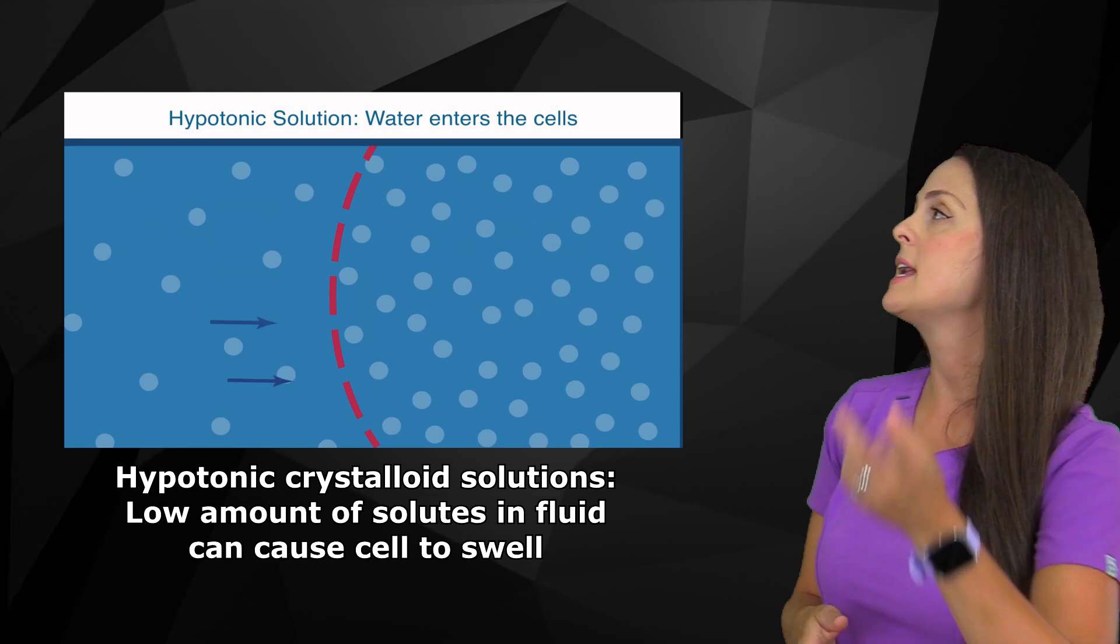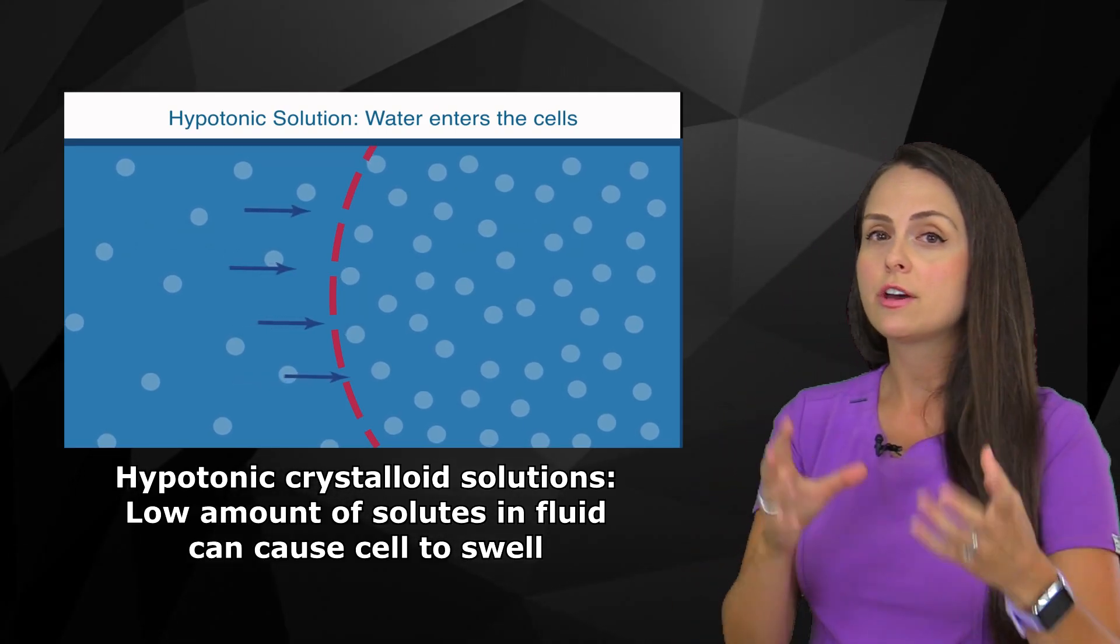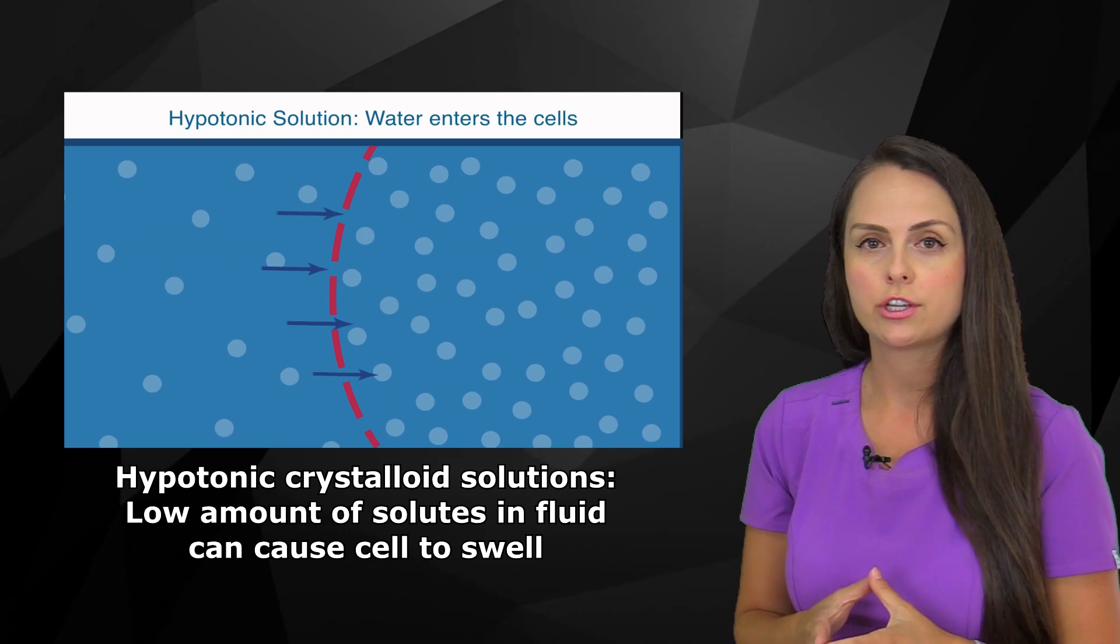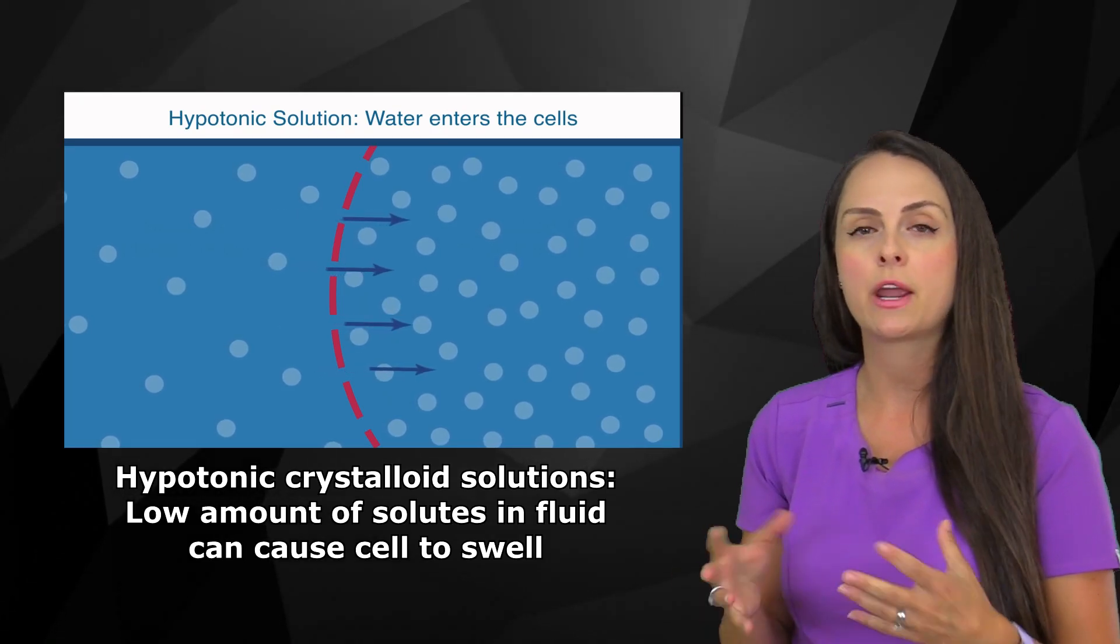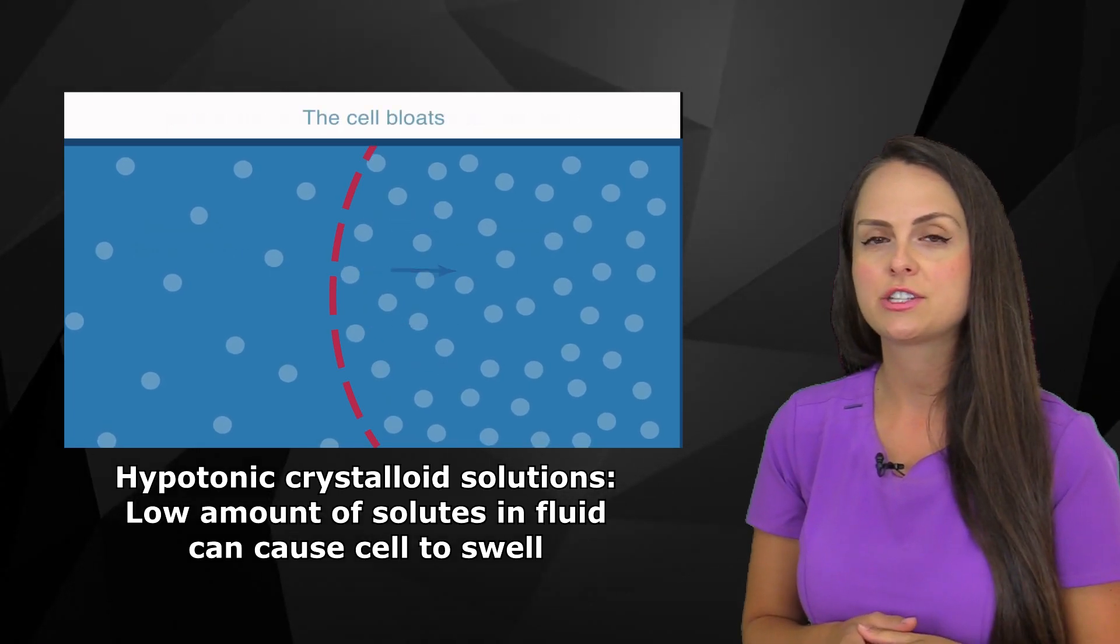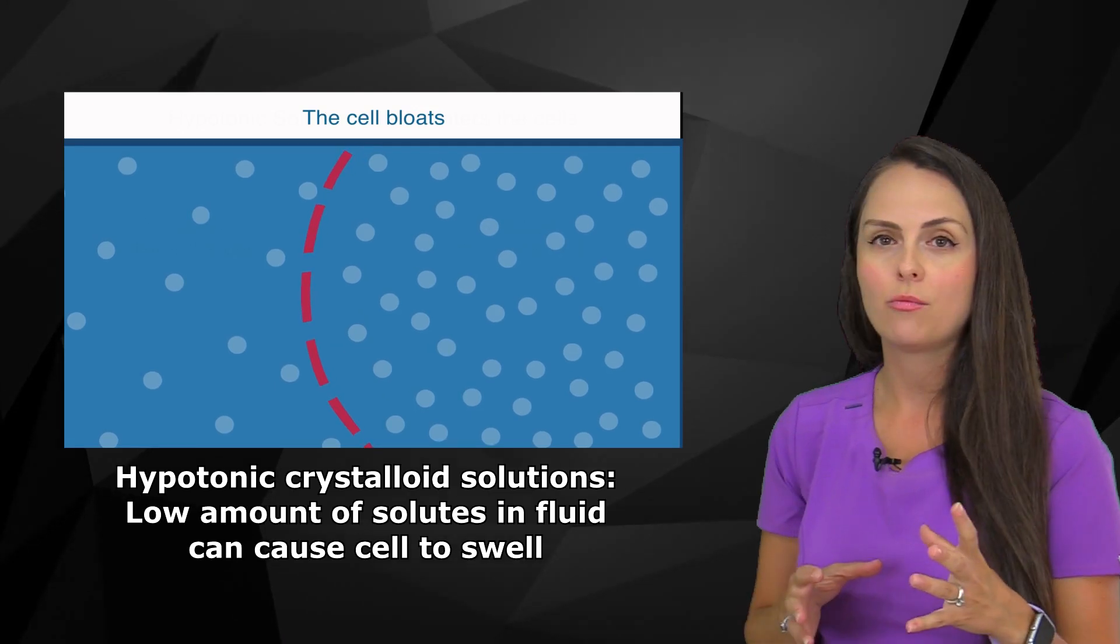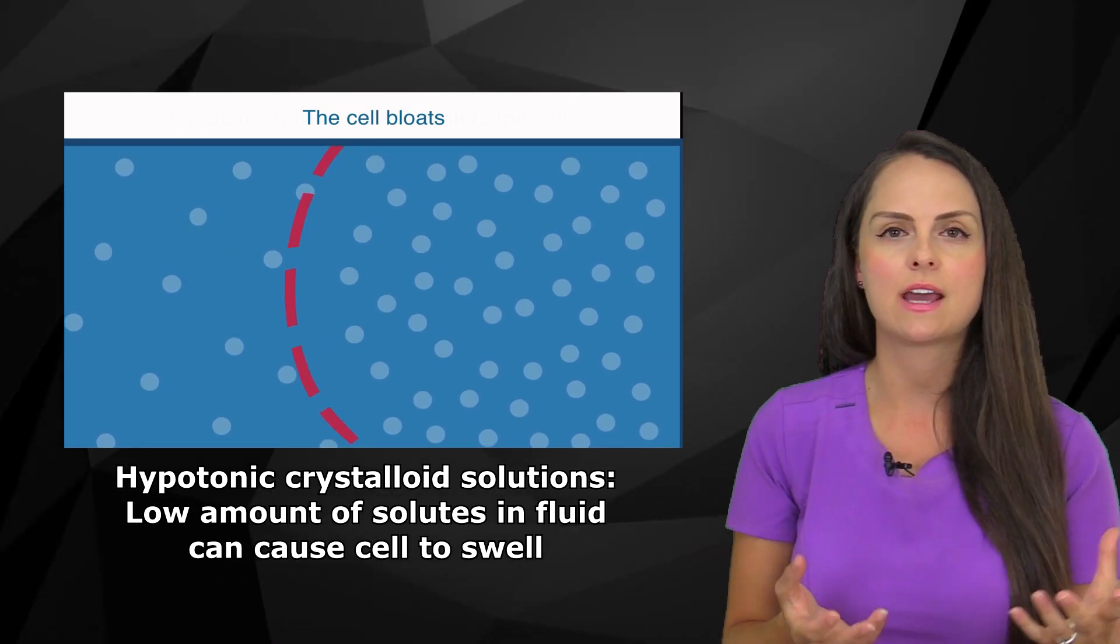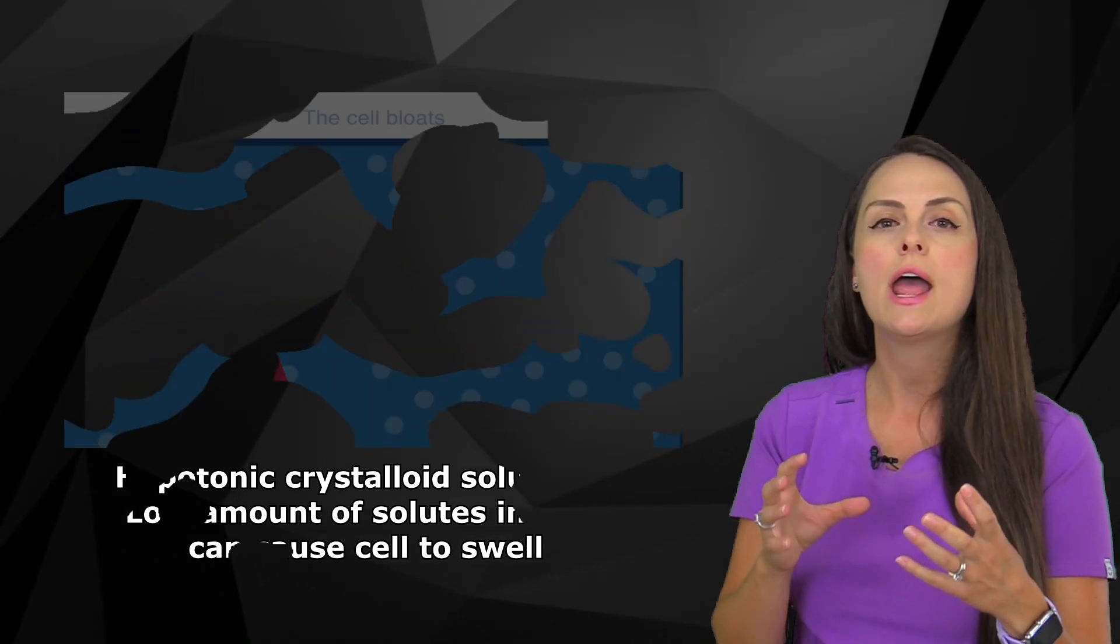However, on the flip side, hypotonic solutions work in an opposite way. In this bag of fluid, they have a lot of fluid but they don't have a lot of solutes. So it has a lower osmolarity, hence tonicity, than compared to your blood. So whenever you throw those fluids into that intravascular space, it can cause water to go inside of the cell, which sometimes is what we need when that cell is dehydrated. But sometimes it can cause problems because it can cause that cell to swell and rupture.